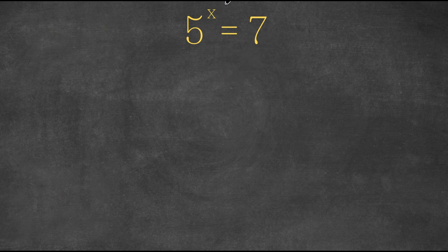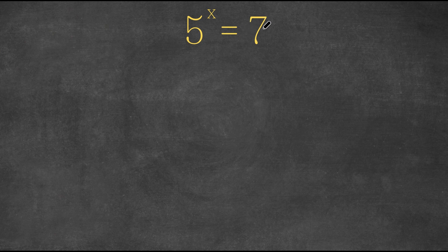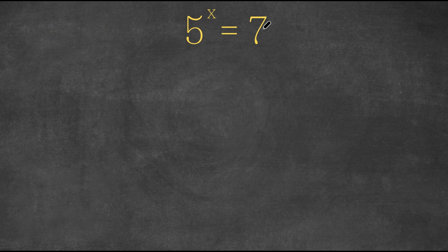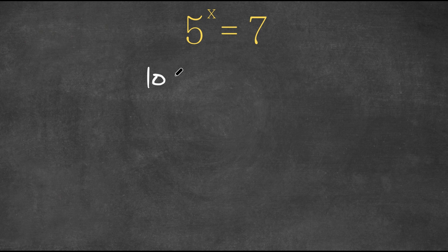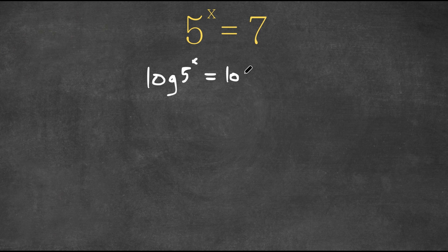So we have 5 to the power of x is equal to 7. Now, what I'm first going to do is take the log of both sides. So now we're going to have log 5 to the power of x is equal to log 7.